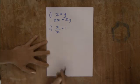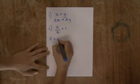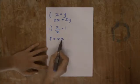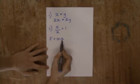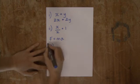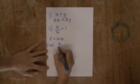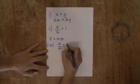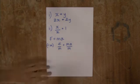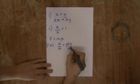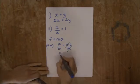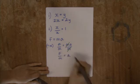We're going to start with Newton's second law of motion, which is: force equals mass times acceleration. If we know the force and the mass and want to find the acceleration, we divide both sides of the equation by m. So we get force over mass equals mass times acceleration over mass. The mass over mass cancels out and equals 1, leaving us with force over mass equals acceleration.